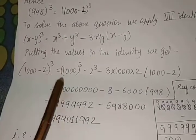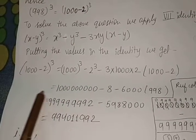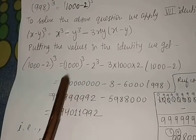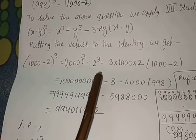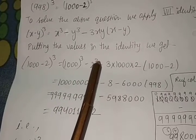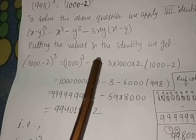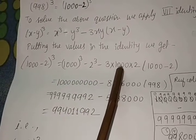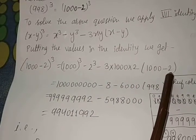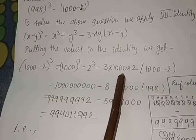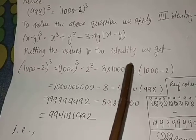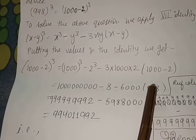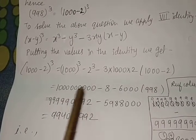Now the solution: as you know, 1000³ means 100 crores. 1000³ equals 100 crores minus 2³, which means 2×2×2, that means 2³ equals 8. Here 3xy means 3×1000×2, and x minus y means 1000 minus 2. So 3×1000 equals 3000, 3000×2 equals 6000, and 1000 minus 2 equals 998.